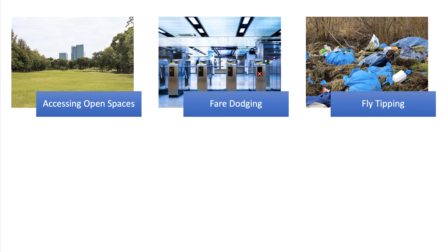There is a wider context to the free rider problem. For example, open spaces, national parks, city parks, etc., particularly relevant at the moment as lockdown measures ease. People want to access open spaces, they want to get a benefit from these public spaces, without necessarily being forced to contribute to the cost.